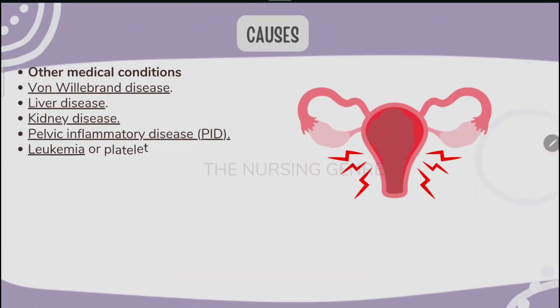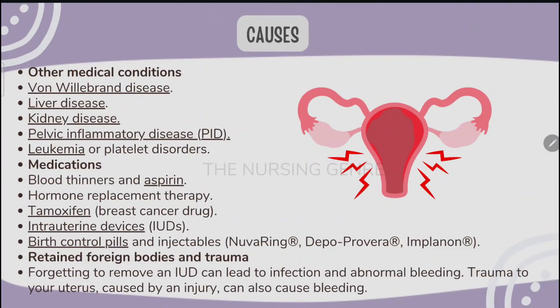Other medical conditions causing AUB include von Willebrand disease, liver disease, kidney disease, pelvic inflammatory disease (PID), leukemia, and platelet disorders. Medications such as blood thinners (aspirin), hormone replacement therapy, tamoxifen (a breast cancer drug), IUD use, and birth control pills or injectables can also cause abnormal uterine bleeding.